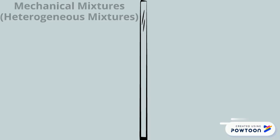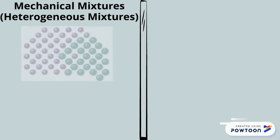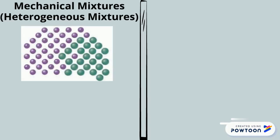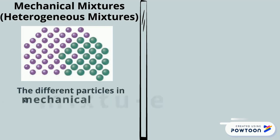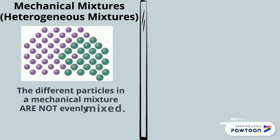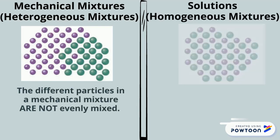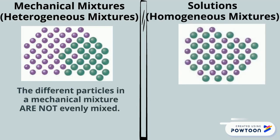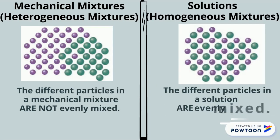The particles in a mechanical mixture or heterogeneous mixture are separated from each other — they're not evenly mixed, so you can see the distinction between them. Whereas in a solution or homogeneous mixture, the different particles are evenly mixed together and totally spread out, so it all looks like one thing.